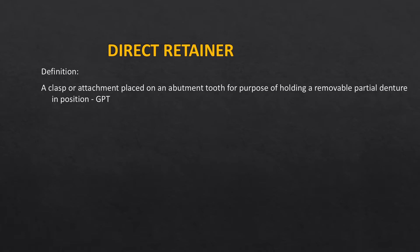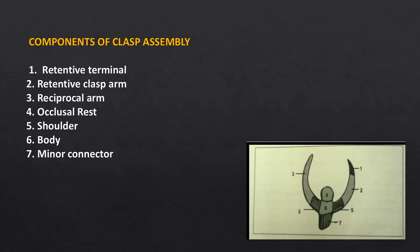A direct retainer is placed on the abutment tooth for the purpose of holding a removable partial denture. In a removable partial denture, the abutment tooth is a tooth on which the clasp assembly is placed — the tooth which is just adjacent to the denture area. This clasp assembly is basically a direct retainer.